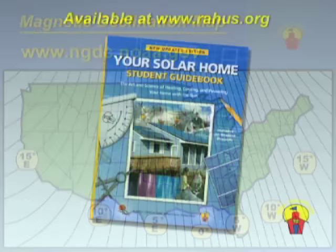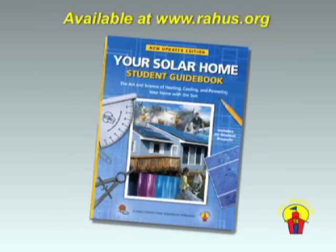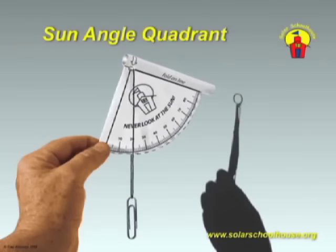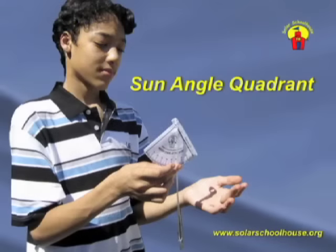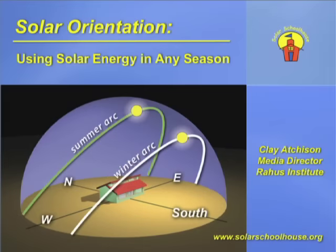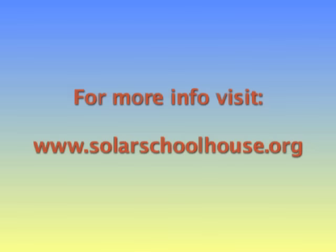The Rahus Institute publishes the Your Solar Home Guidebook. It has complete directions for using these maps to find true north with a compass and is available at www.rahus.org. The guidebook also includes templates and instructions for simple projects for measuring the sun's altitude and azimuth. The templates are photocopied and then cut out and folded to make inexpensive tools for plotting the sun's position. You can check your actual measurements against your sun path charts. This concludes our introduction to solar orientation. If you'd like more information, please visit our website at www.solarschoolhouse.org. Best of luck and have a sunny day.